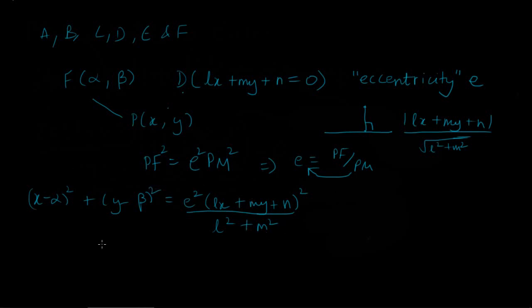So now we've got this. You can treat this as a general equation if you wish that way. But then I would like to go further. I'd like to write this general equation in the terms of the other general equation that we saw before. Let me just write this general equation again. The new general equation that we just found out: (x minus alpha) whole square plus (y minus beta) whole square equals E square into (Lx plus My plus N) the whole square divided by L square plus M square.